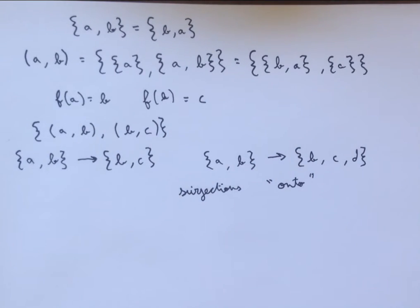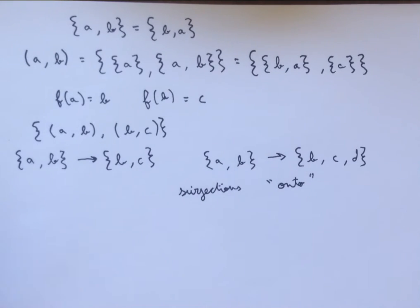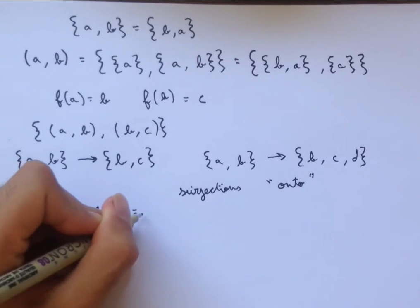We also describe them as being onto. And so now another type of function is one where each element maps to a unique element. So this one, it's the case that A is going to map to B, B is going to map to C. There's no element that maps to the same element.